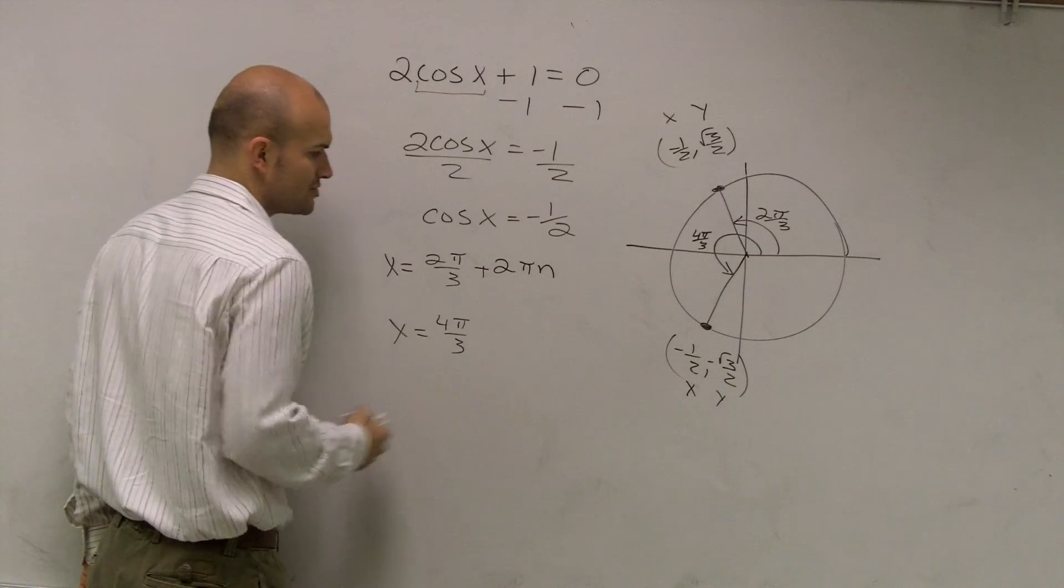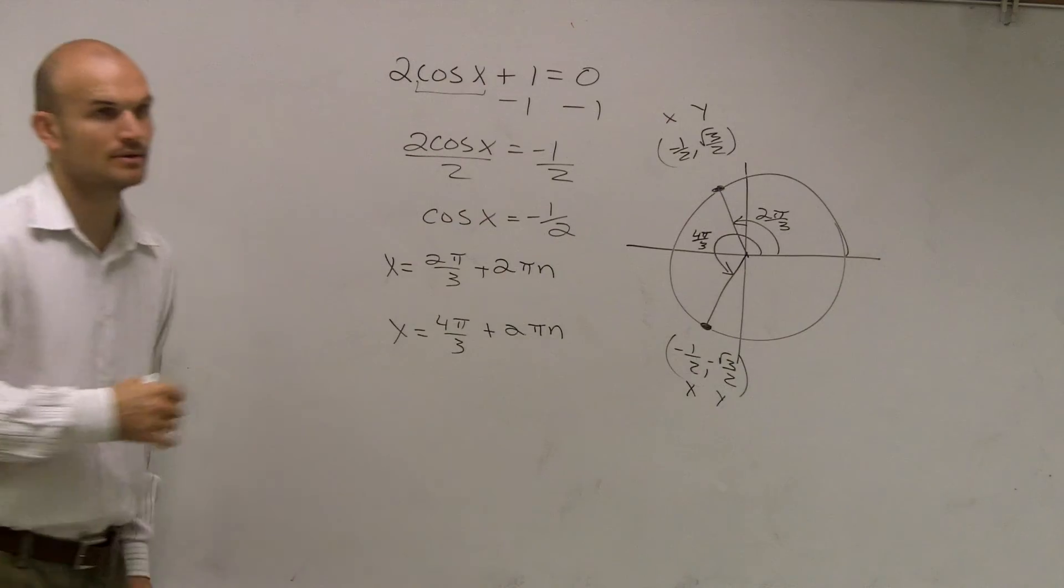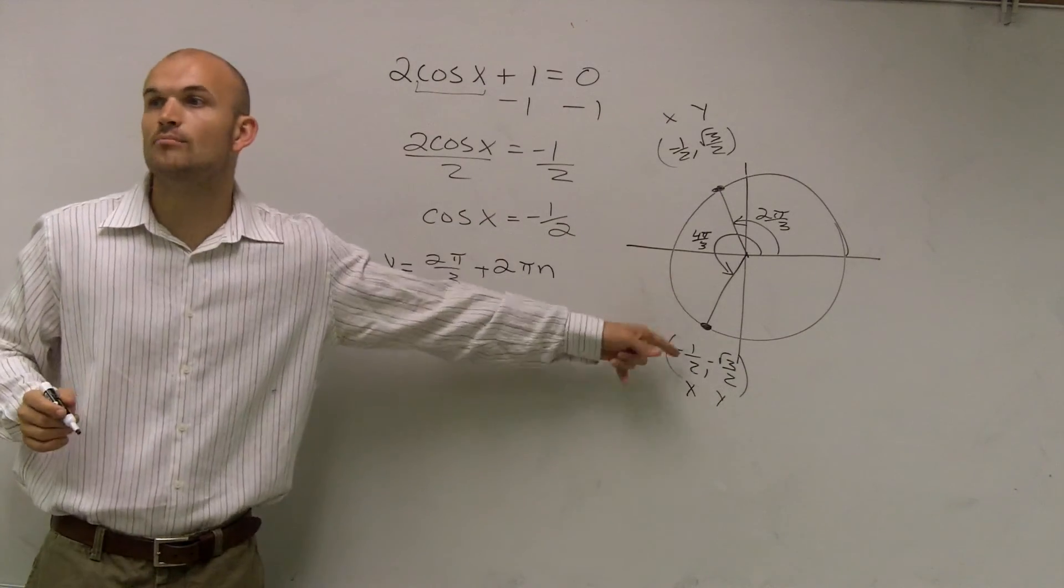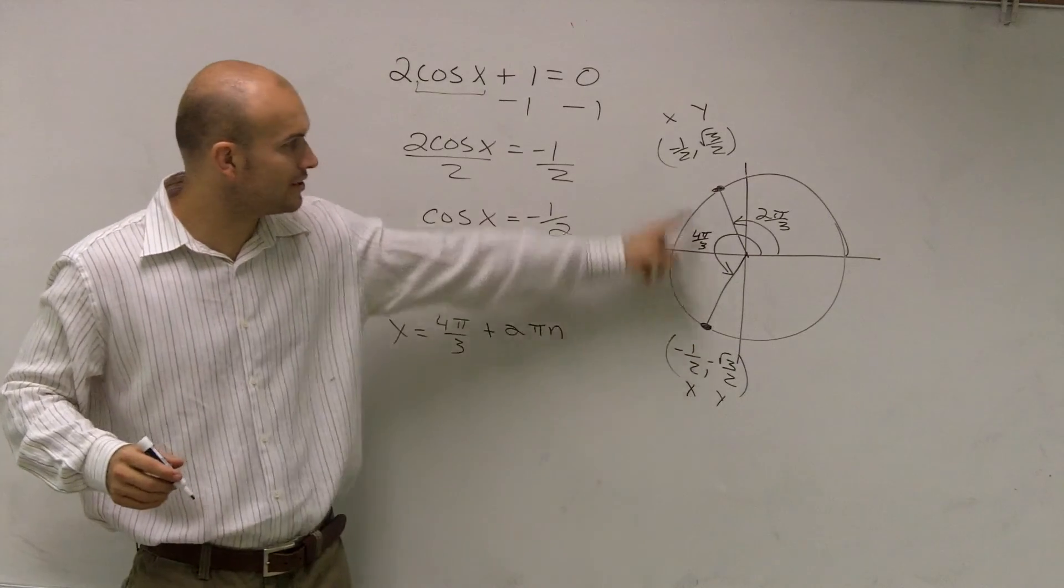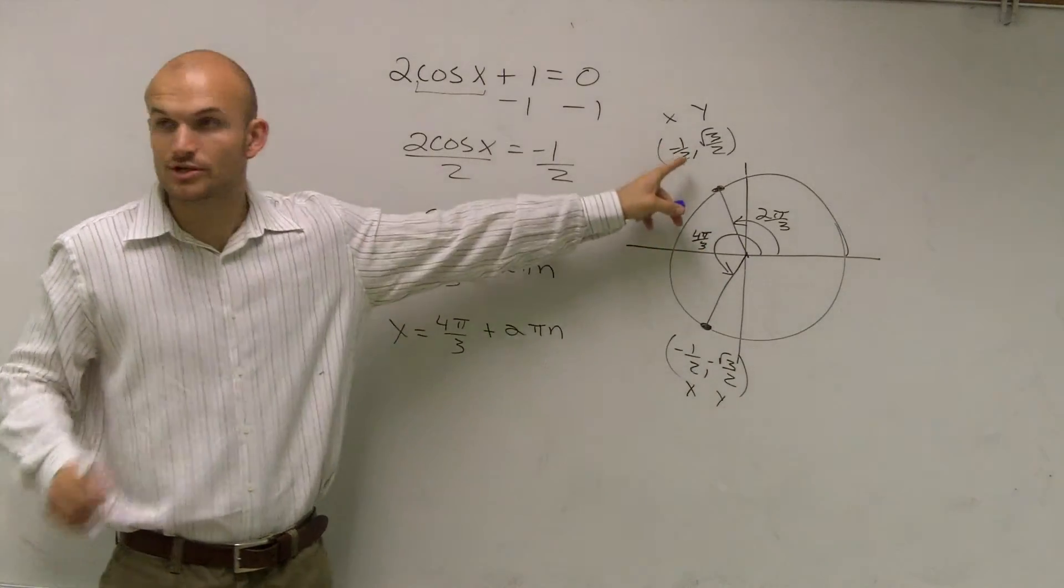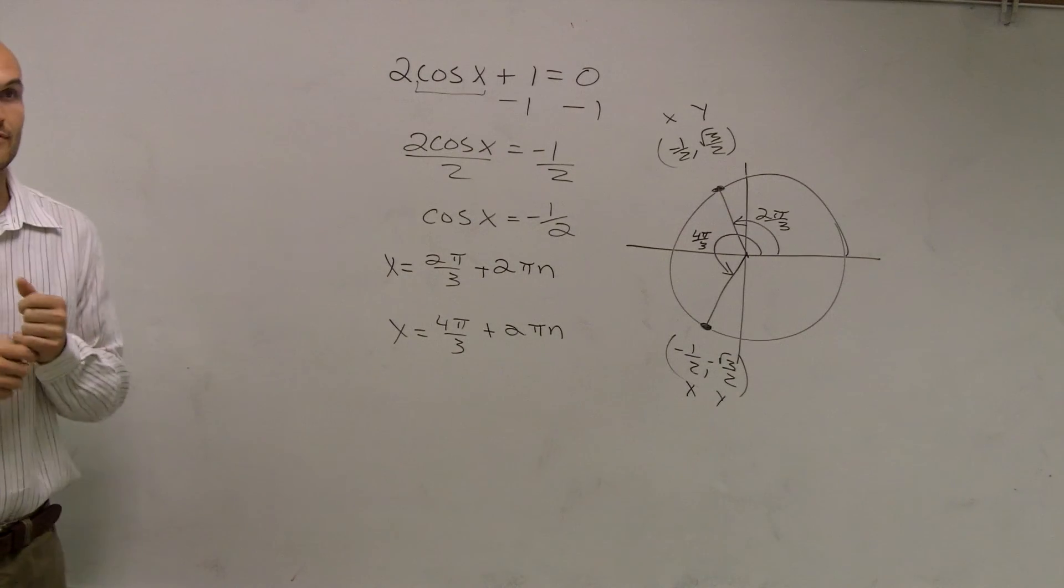So I need to add 2 pi n plus 2 pi n. Because we're also going to add all the multiples of that answer as well. Any coterminal angle of 4 pi over 3 is also going to produce our cosine of x, which equals negative 1 half.